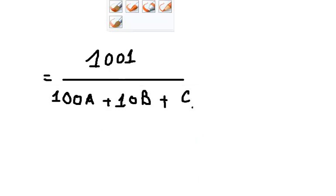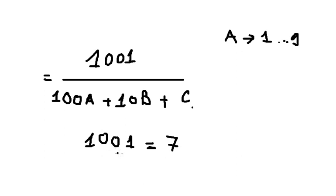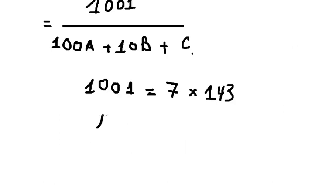We know that A should be a number from 1 to 9, so the three-digit number ranges from 100 to 900. Now we analyze 1001: it factors as 7 times 143. After dividing by 7 we have 143, so 143 is suitable here. That means A equals 1, B equals 4, and C equals 3.